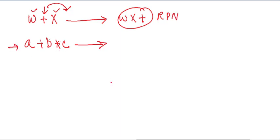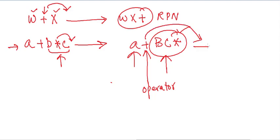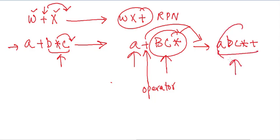For the first expression, according to BODMAS we solve multiplication first. So B star C becomes BC star — the operator is moved to the right. What we effectively have is A plus BC star. Now we have an operator between these two parts, so it moves to the right, giving us A BC star plus. That is the RPN solution.